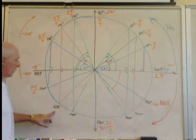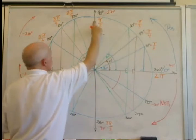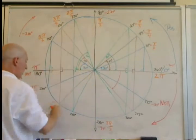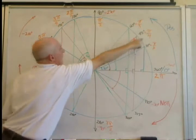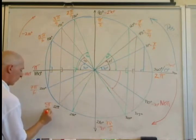225 degrees, well, let's see, do it by 45, so that's 1 of them, 2, 3, 4, 5 of these. 5 pi over 4.